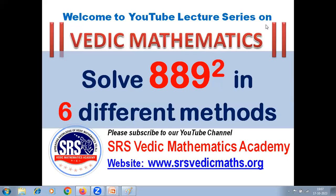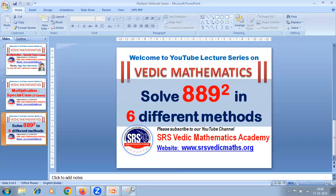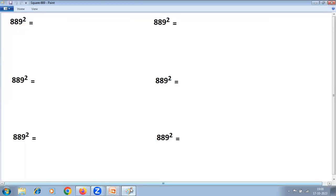Welcome to the YouTube lecture series on Vedic Mathematics. Today's topic is solving 889 squared in six different methods. Please subscribe to our YouTube channel SRS Vedic Mathematics Academy. We'll be using topics from Vedic Maths Part 3, so please learn that before going through this video.